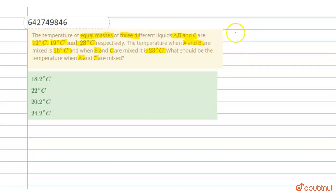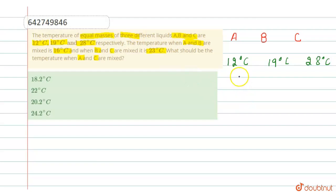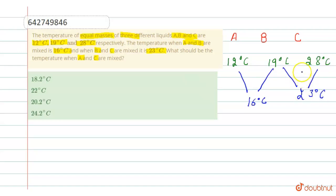What should be the temperature when A and C are mixed? In this question, we have to find the temperature. We have three different liquids A, B, and C — liquid A at 12°C, liquid B at 19°C, and liquid C at 28°C. A, B, and C have equal masses m, m, and m.